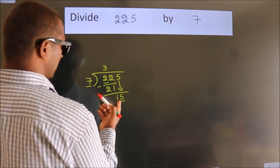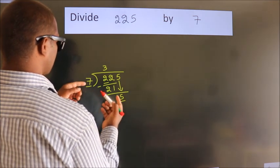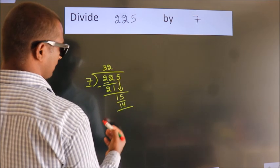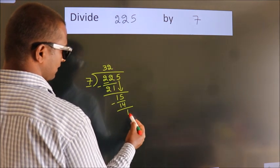A number close to 15 in the 7 table is 7 twos 14. Now we subtract. We get 1.